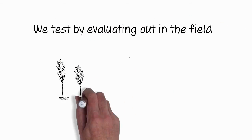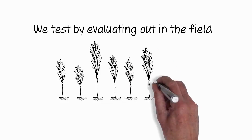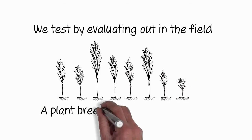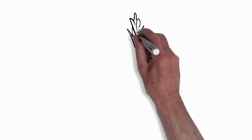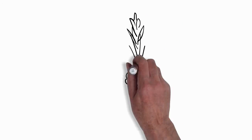We test it by evaluating the material out in the field. So once the plants have got to the right stage we have a plant breeder that will go out into the field looking at the individual plots and he'll assess them and he'll pick out plants that he thinks are worth evaluating for the future.